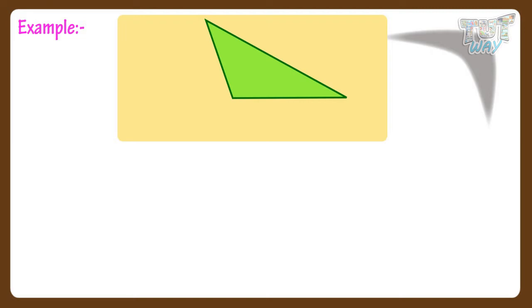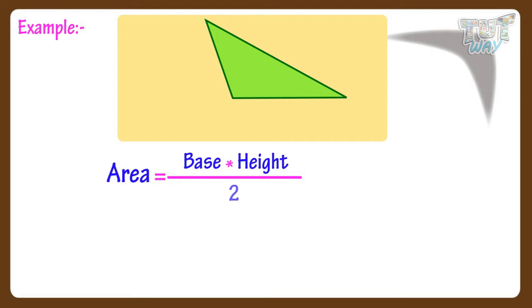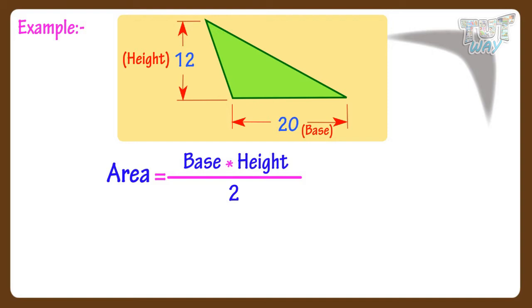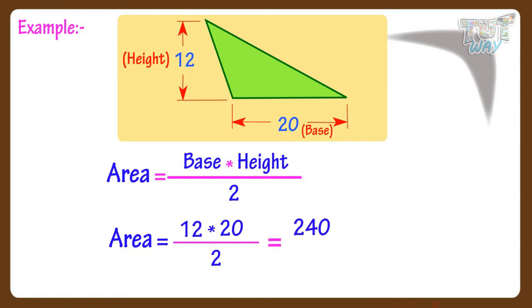Now let's find the area of another triangle. Here we have a triangle — we have to find its area. We know area is base multiplied by height divided by 2. Here the height is given — it is 12 centimeters — and the base is also given, which is 20 centimeters. So area equals 12 multiplied by 20 divided by 2. 12 multiplied by 20 equals 240, and 240 divided by 2 gives 120. So the area is 120 centimeters square.